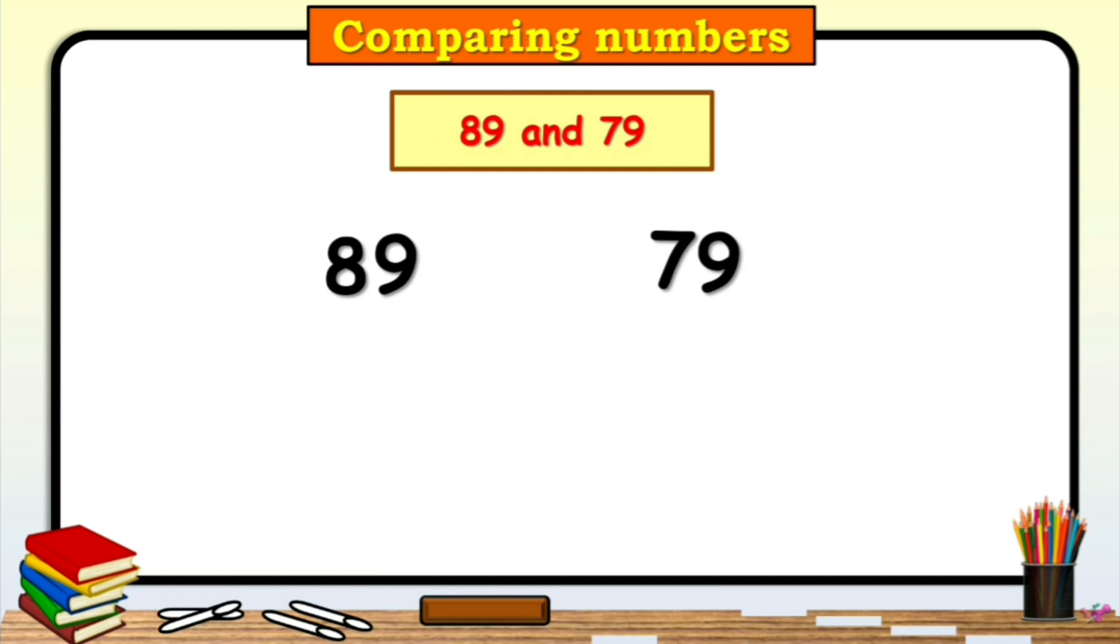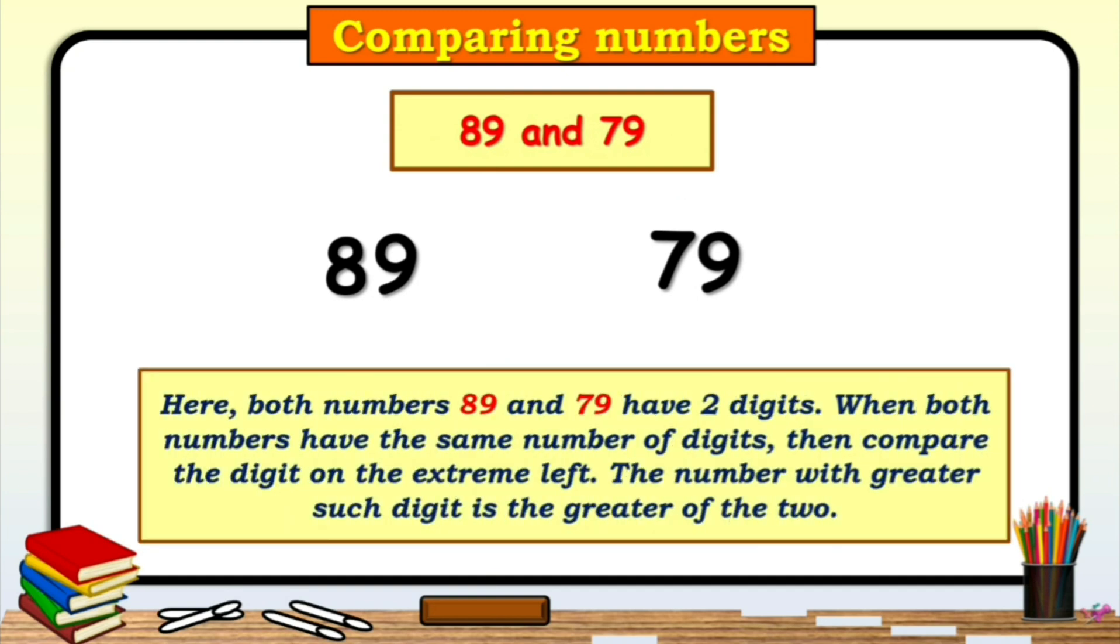Now, let's compare 89 and 79. Which number is greater number, children? Here, both numbers 89 and 79 have two digits. When both numbers have the same number of digits, then compare the digit on the extreme left. So, here extreme left digit of both numbers are 8 and 7.